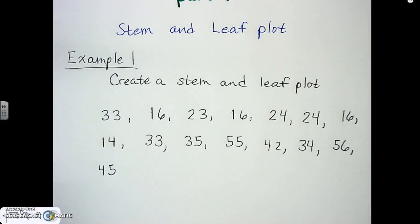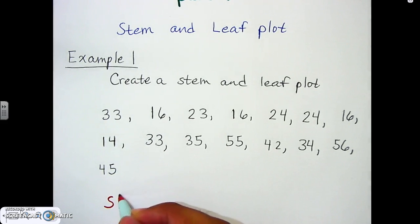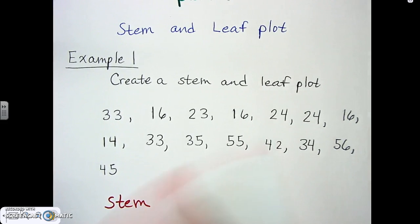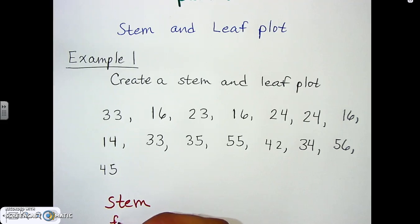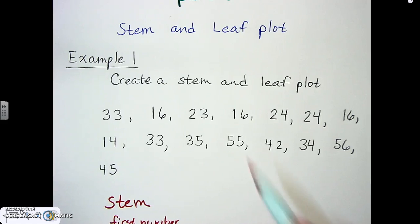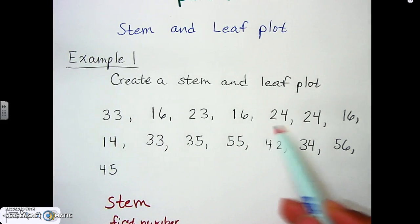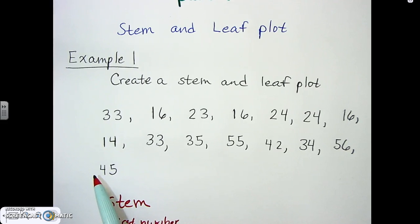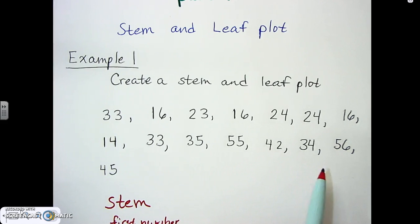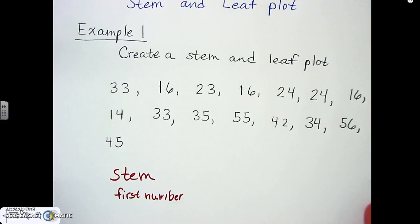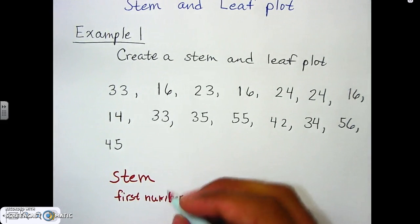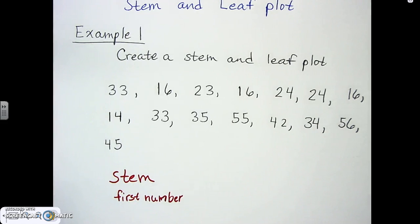The word 'stem' deals with the first number of a two- or three-digit number — or whatever you have. So the first number is the stem. That means numbers like 31, 21, 22, 14 — the stem is the first digit: one, one, two, one, four. Numbers like 13, 33, 54, 35, 55 — the stem is again the first digit. Remember, the first number is the stem.